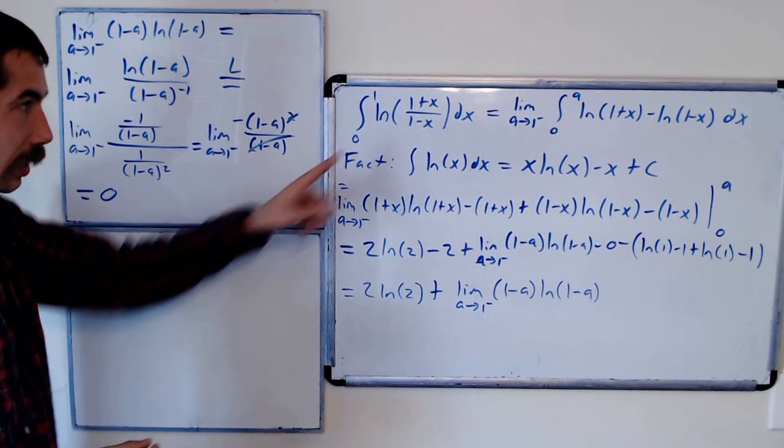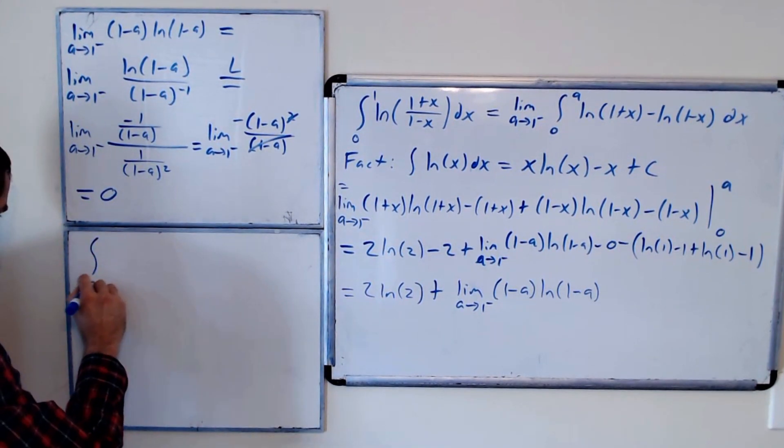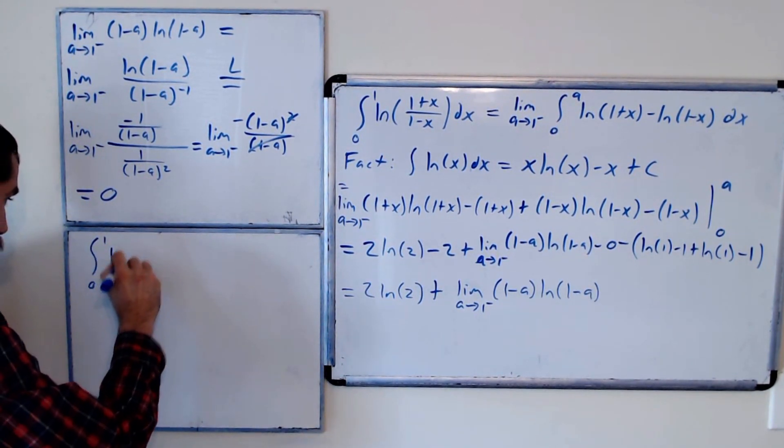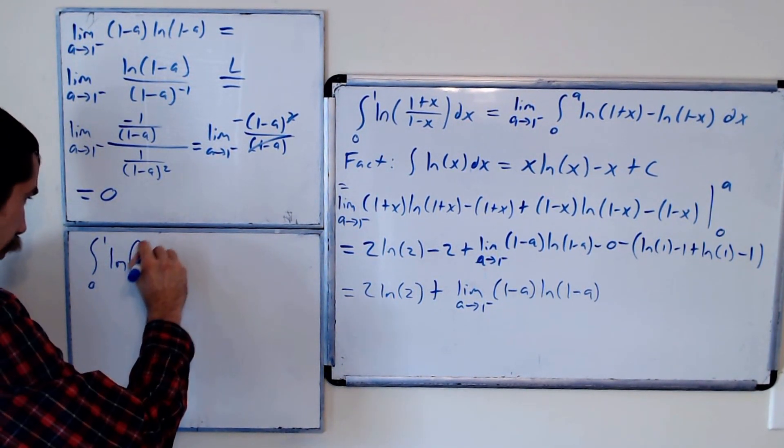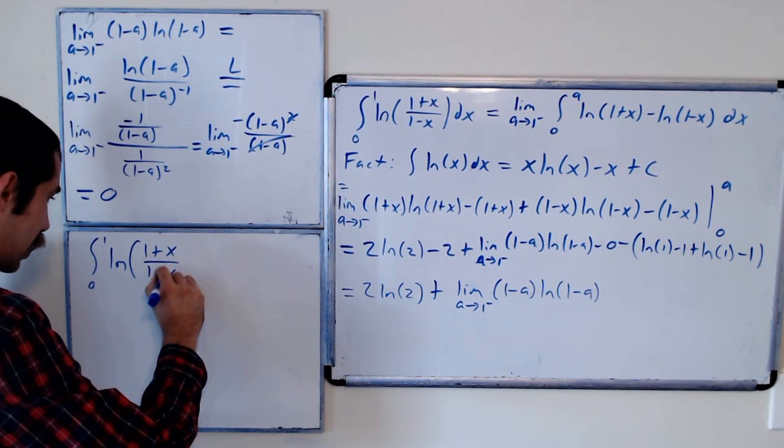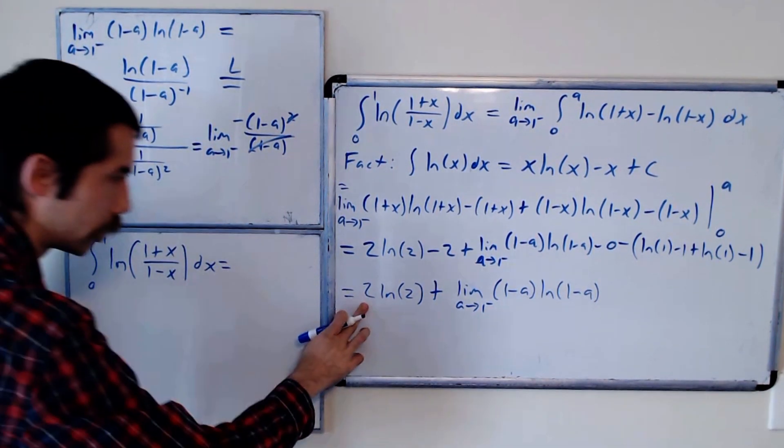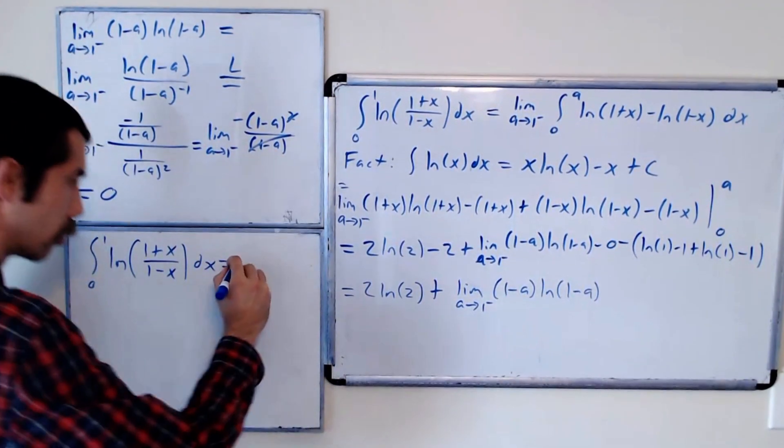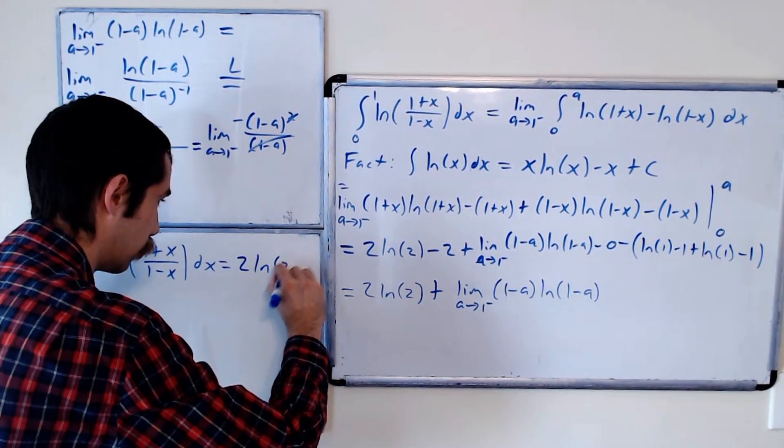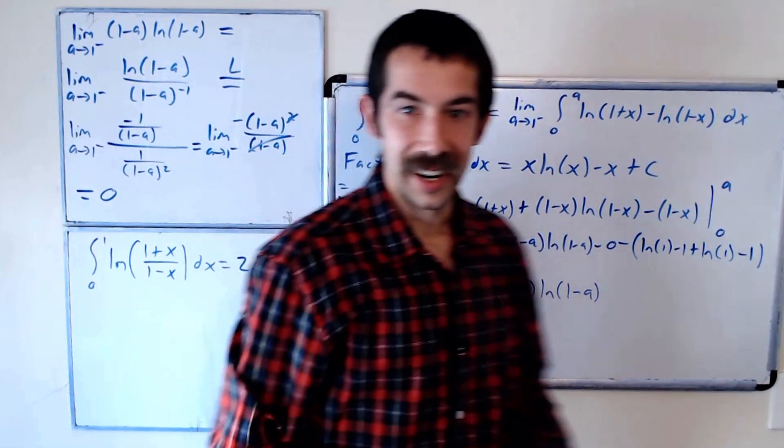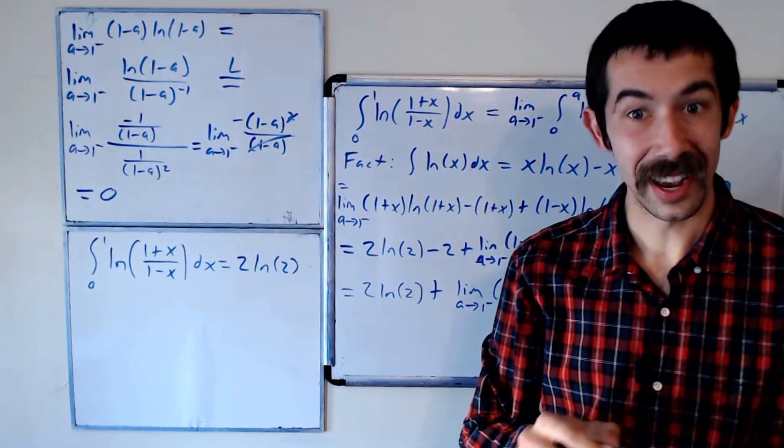So to put it all together, the integral from 0 to 1 of ln of 1 plus x over 1 minus x dx is equal to 2 ln of 2 plus 0. So 2 ln of 2. And that was an integration B question, and it wasn't that hard to solve.